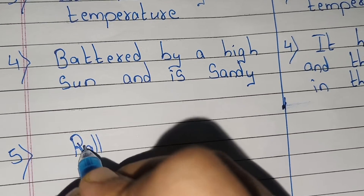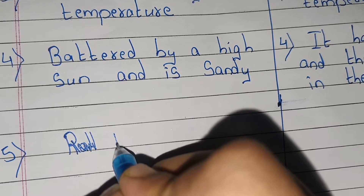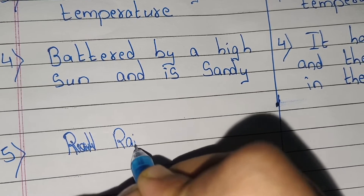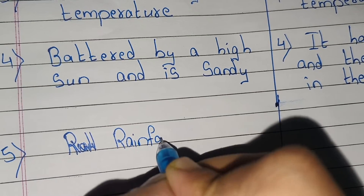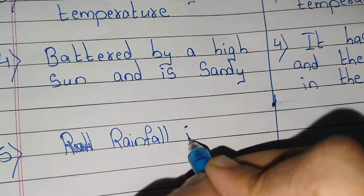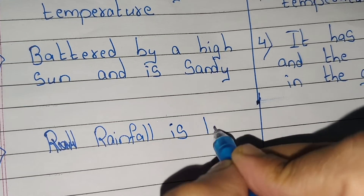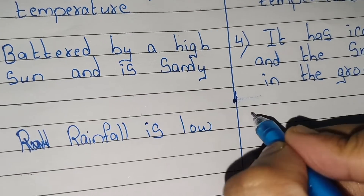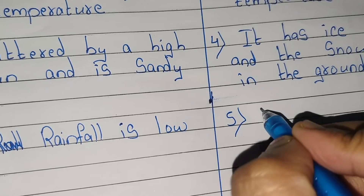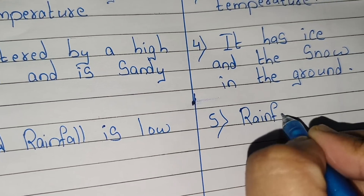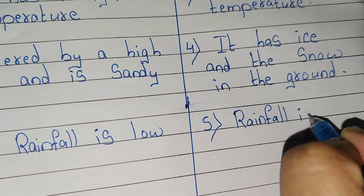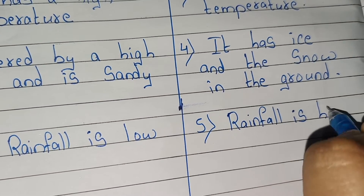Fifth point: in hot desert, rainfall is low. And in cold desert, rainfall is high.